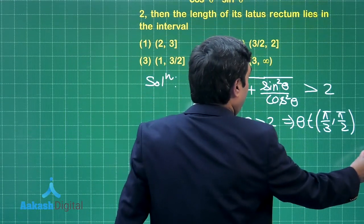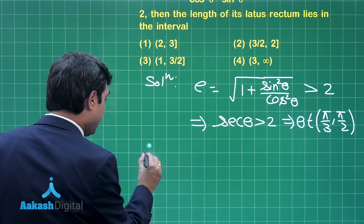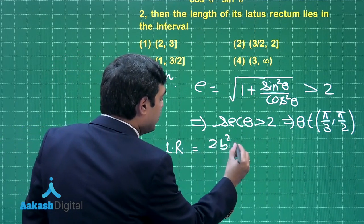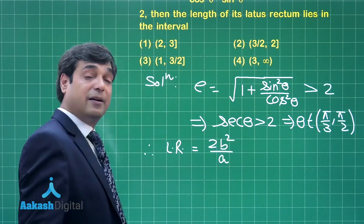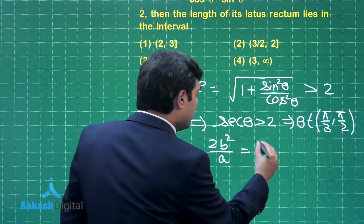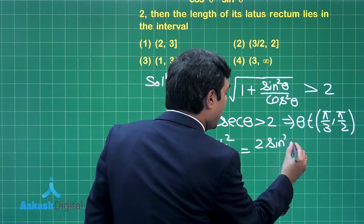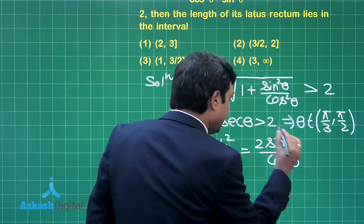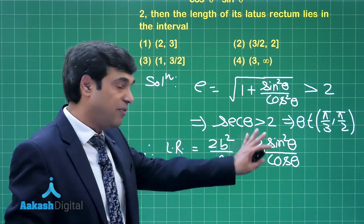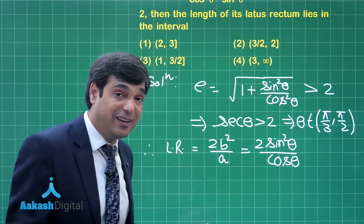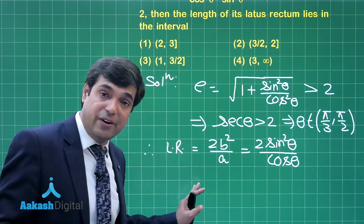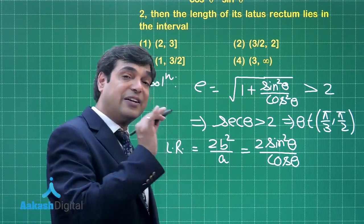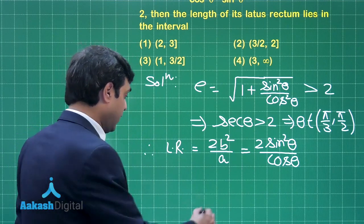Latus rectum - what is the length of latus rectum given by? Length of latus rectum (LR) is given by 2b²/a, meaning 2sin²θ/cos θ. Now, two possibilities: just simplify for one more step and you can further take derivative to apply maxima minima, or since these are trigonometric ratios you can plan directly as well.